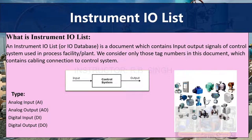Whenever you make the IO List, imagine you are in the control room or at the control system. Whatever signals are coming to the control room will be inputs, and whatever signals are going out of the control room will be outputs.